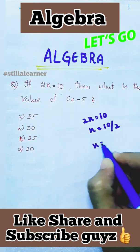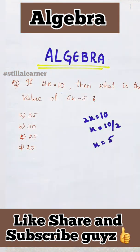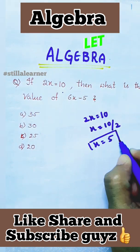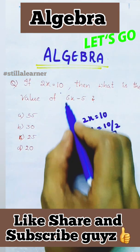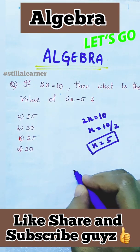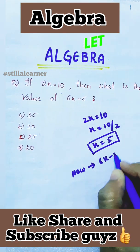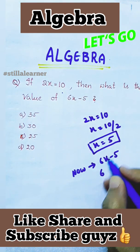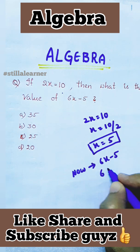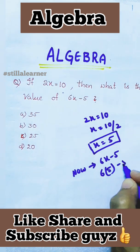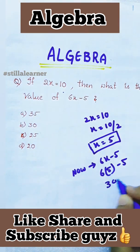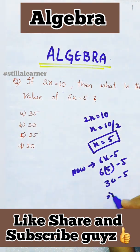After that, the value of 6x, now 6x minus 5, we will just take out the value of x here. 6 into 5 minus 5 means 30 minus 5, we will get answer 25.